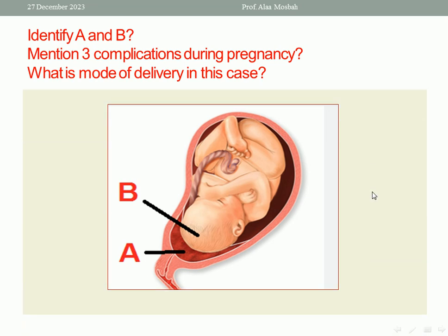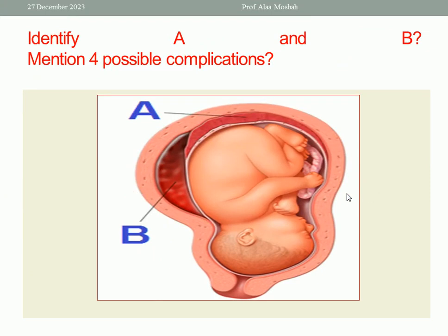Let us go to the next. Please look at this picture and identify A and B, then mention four possible complications. As you see in the picture, this is placental abruption. A is the placenta. B is the hematoma formed by placental separation. Placental abruption could be concealed, or revealed, or mixed type. In this type, the blood is retained inside the uterus, so this is called the concealed one. Here is the placental separation and hematoma.